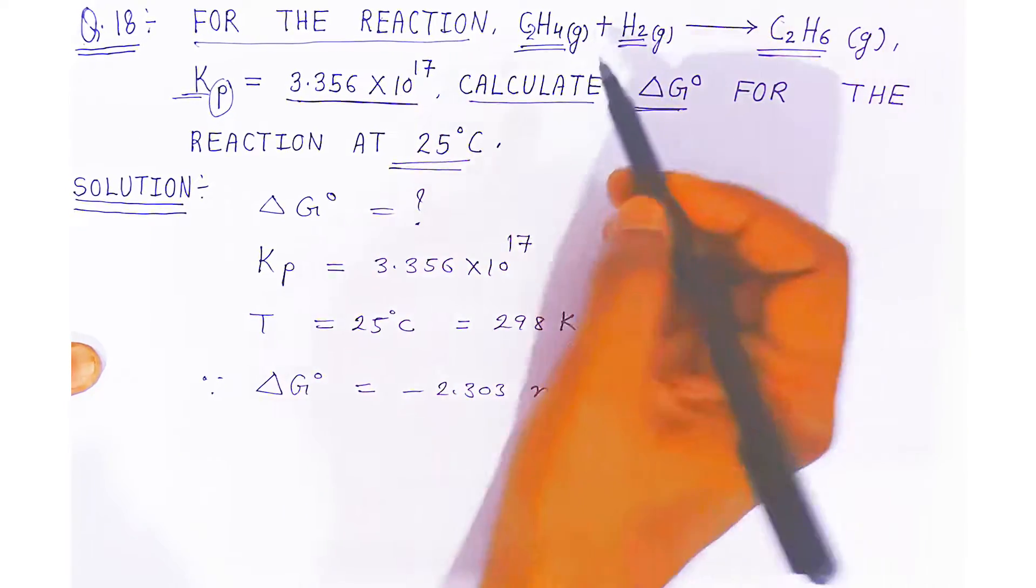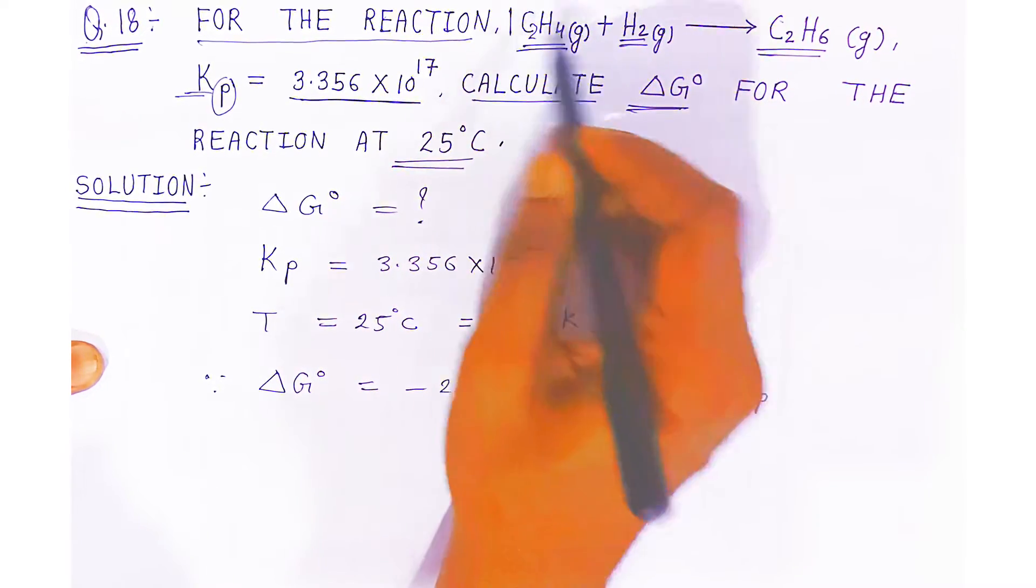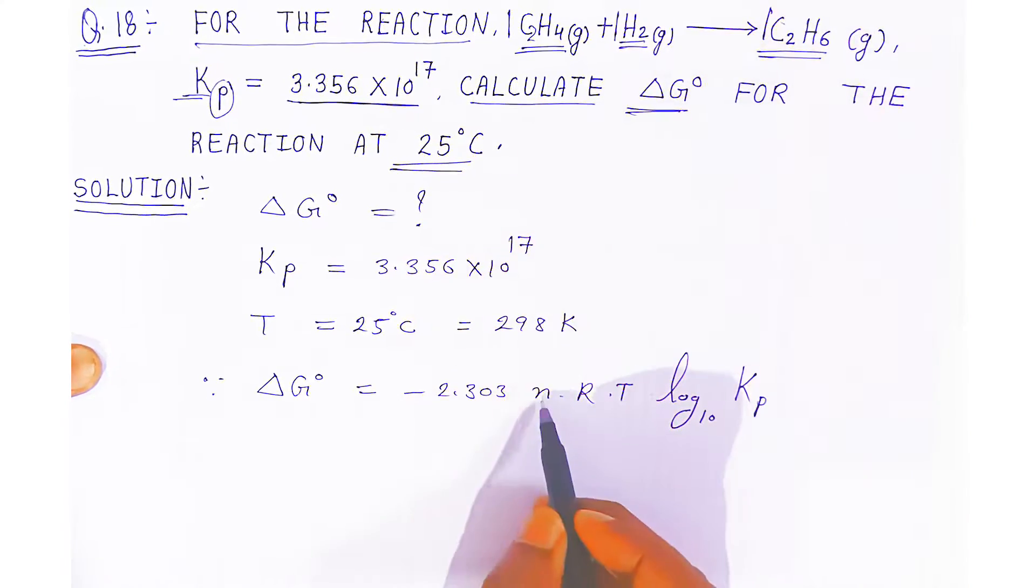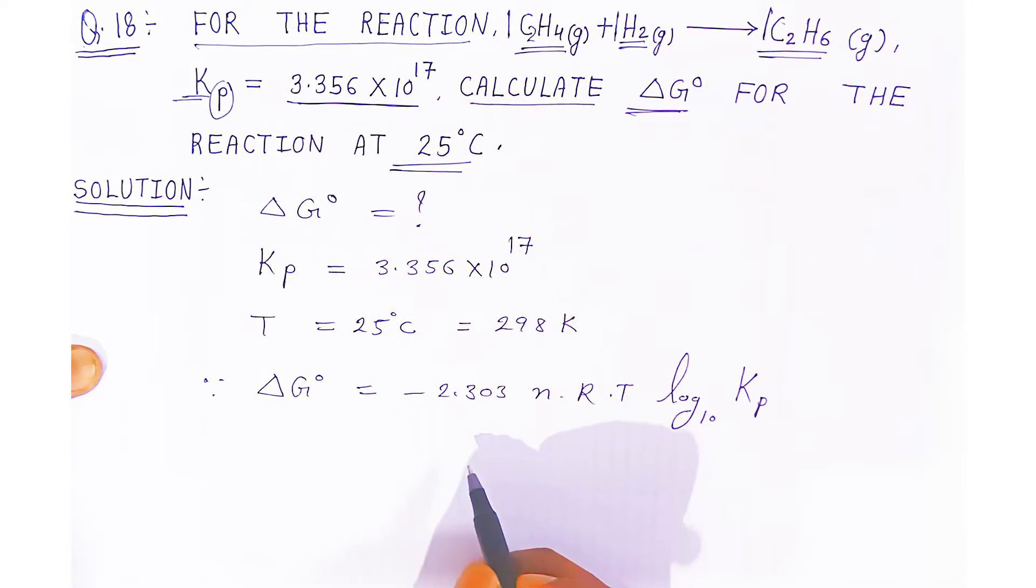Here 2 moles are combining with 1 mole, and you are getting 1 mole of ethane gas, so n will always be 1.